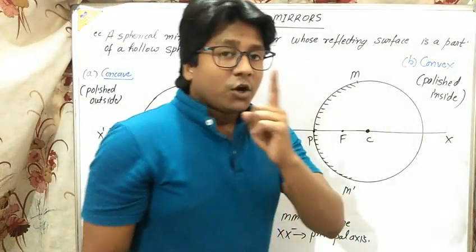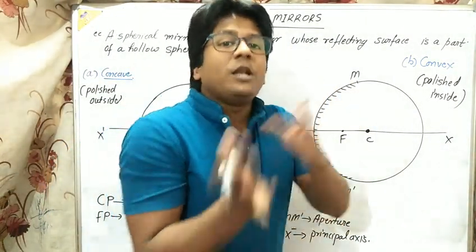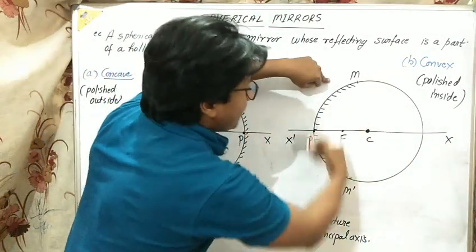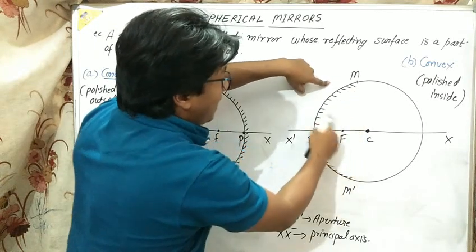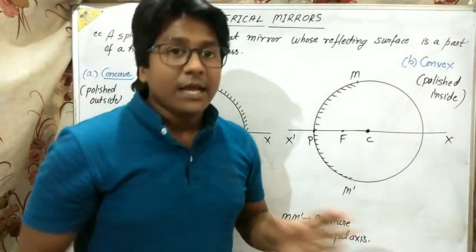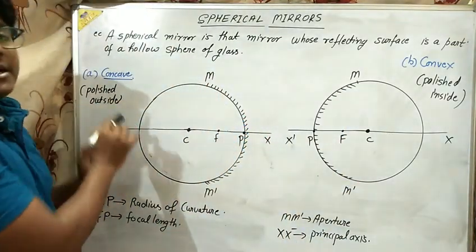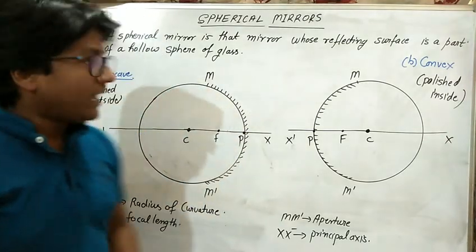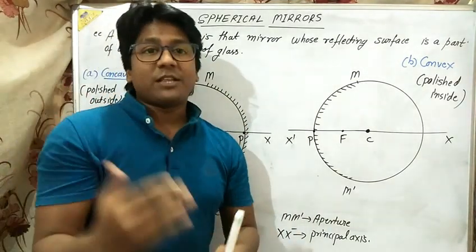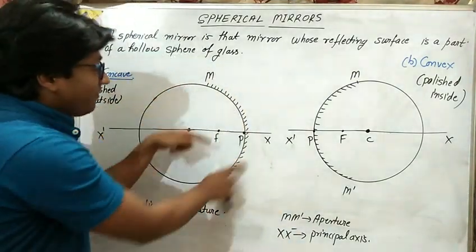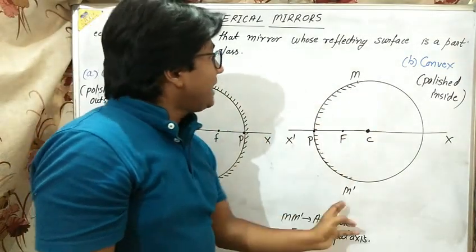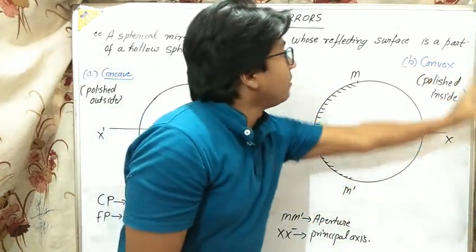Convex mirror is polished from the inner side of the hollow sphere. So concave mirror has its reflecting surface on the internal/inner side — like a cave — which is the concave mirror. The outer or bulky portion of the reflecting surface is the convex mirror.